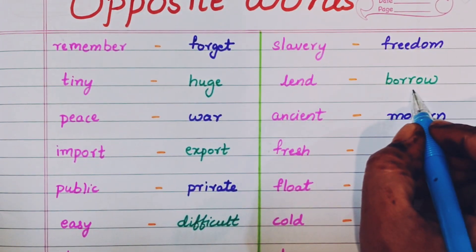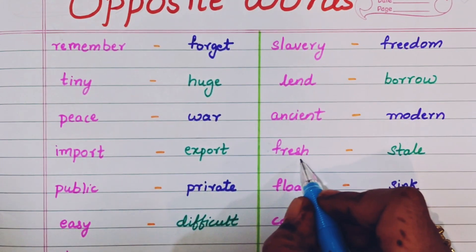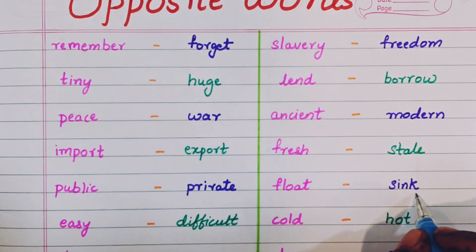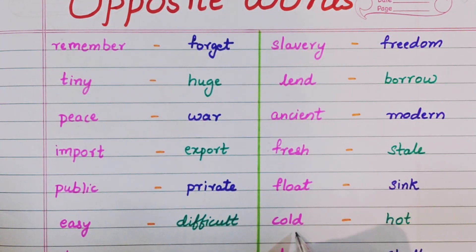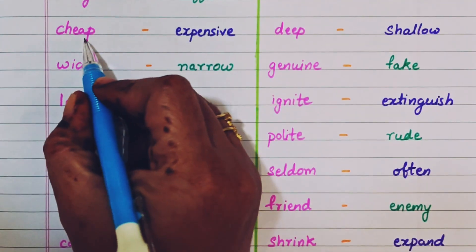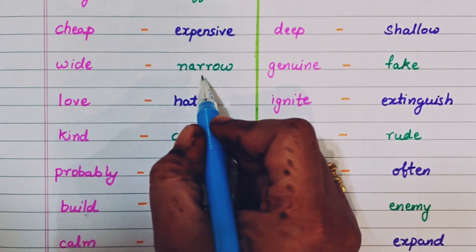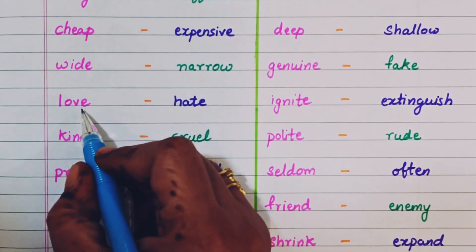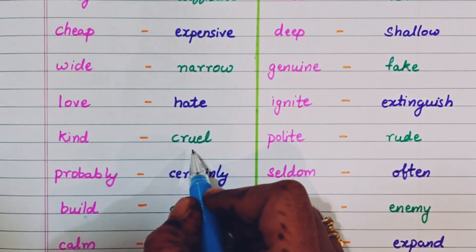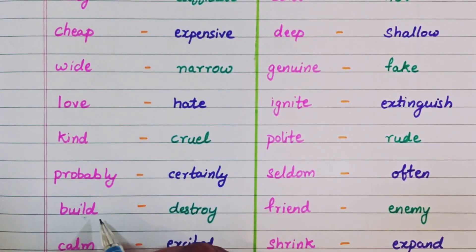Lend, borrow. Ancient, modern. Fresh, stale. Float, sink. Cold, hot. Cheap, expensive. Wide, narrow. Love, hate. Kind, cruel. Probably, certainly.